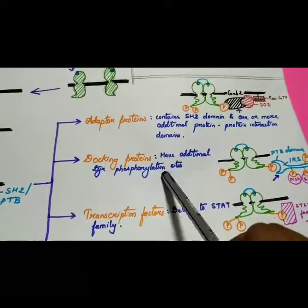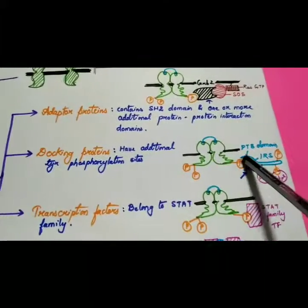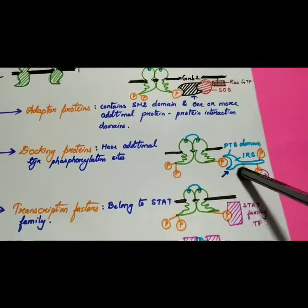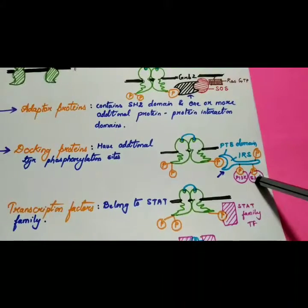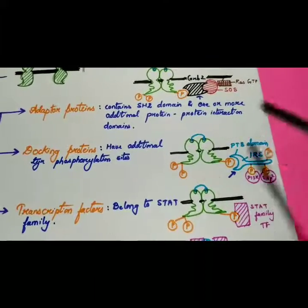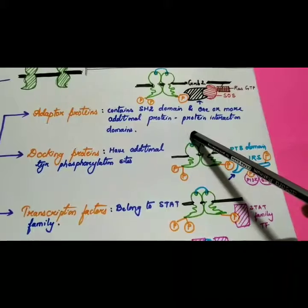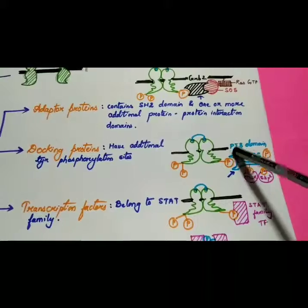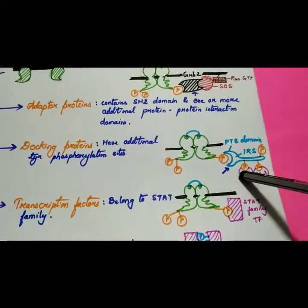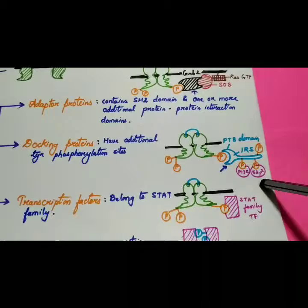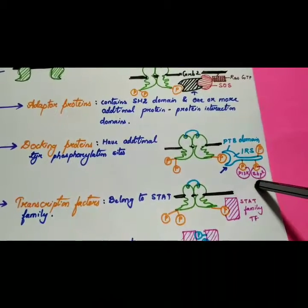Second is the docking protein, which has additional tyrosine phosphorylating sites. The PTB domain (shown in sky blue) has phosphate groups to which other proteins attach. For example, IRS has additional tyrosine phosphorylated sites to which other molecules such as PI3K and SHP2 are attached. All of these are protein-protein interaction types.